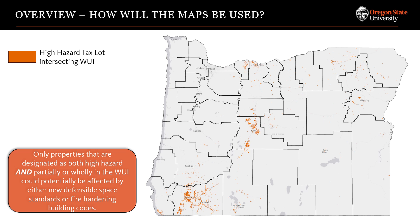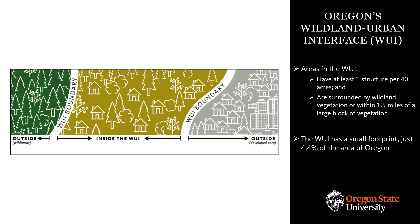In the remainder of this video, I will walk through how researchers at OSU develop these maps and how the maps will be used to implement a statewide strategy that prioritizes homes and communities with the highest hazard. Let's begin with the wildland-urban interface. Community wildfire disasters can and have occurred in a broad range of communities from rural to urban. The research is clear that around the western US, most of those community wildfire disasters have occurred in a region that we call the wildland-urban interface, or the WUI.